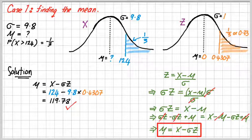If you wish to check your answer, you can plug in the value of the mean and the standard deviation of 9.8 and use whatever method you need to find that, to confirm that we get one-third. So that's finding the mean.